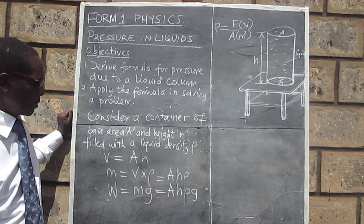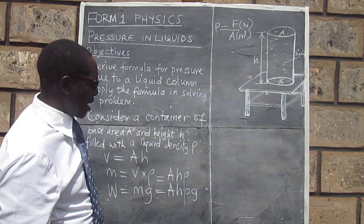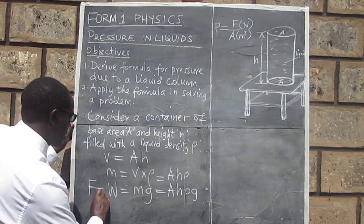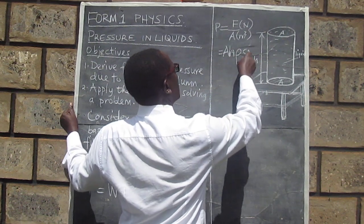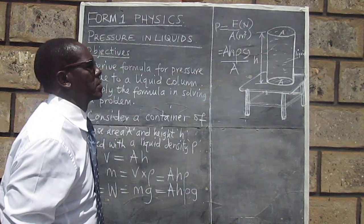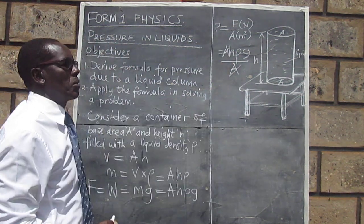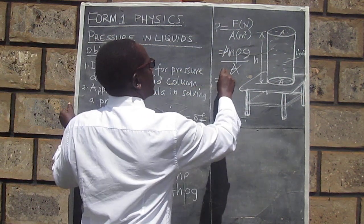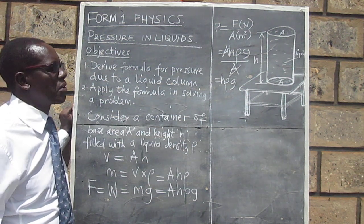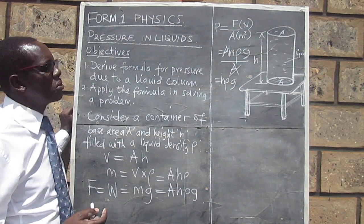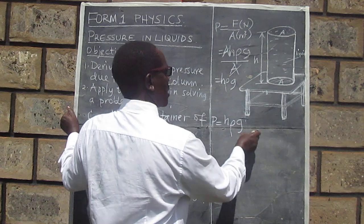It means we can now substitute into the pressure formula. Where we have F, we put the weight because that is the force. So we write P = (A·H·ρ·g) / A. We can see that the area cancels out, and we end up with pressure equal to H·ρ·g. This is the formula used for calculating the pressure due to a liquid column: pressure equals height times density times the acceleration due to gravity.